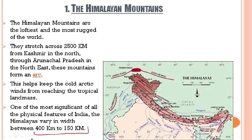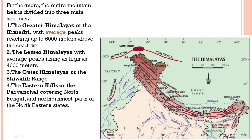We will learn about the variation in width of the Himalayan mountains in greater detail once we begin learning the divisions of the Himalayas: the middle Himalayas, the outer Himalayas or the Shivaliks, and the Purwanchal. We will cover this variation in greater detail when we start learning the different divisions, and we find the entire mountain belt of the Himalayas is divided into three main sections.